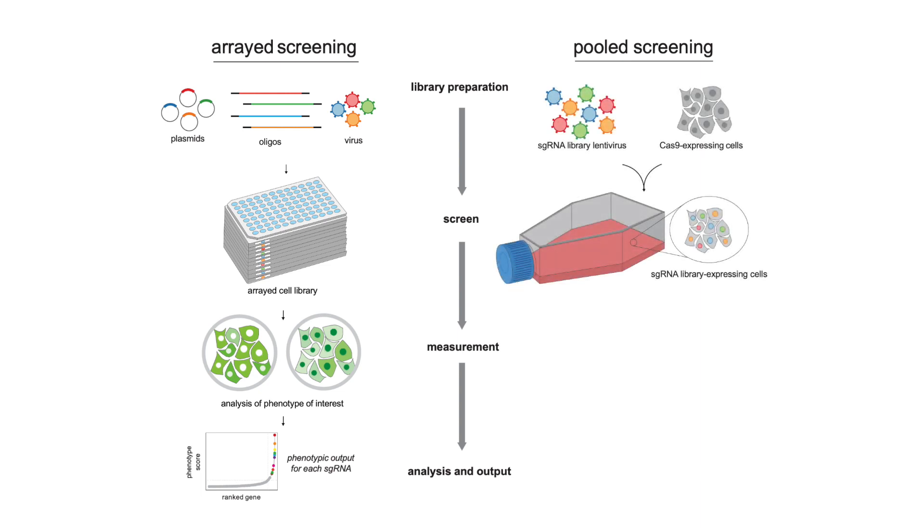Meanwhile, in pooled screens, all perturbations can be synthesized and introduced into cells as a single sample, making it easier to scale up. Most pooled screens use low-MOI, lentiviral transduction, and next-generation sequencing to measure the relative abundance of each perturbation before and after enrichment for a phenotype of interest. The two most common enrichment strategies are cell viability and fluorescence-activated cell sorting.